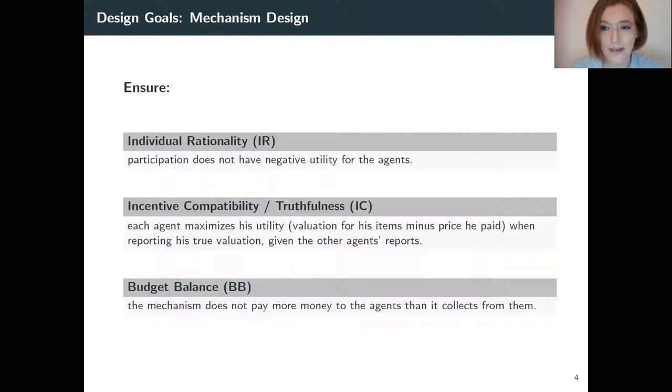We want to do mechanism design, and we would like to design good mechanisms in the following sense. First, we would like them to be individually rational, which means that participation is not something that the agents have to pay for. Second, we would like to be incentive compatible or truthful, which simply means that for everyone, it is a best strategy to simply report their true valuations instead of making up some lie. And lastly, we would like to be budget balanced, which simply means we don't have to subsidize the trade, i.e. the mechanism collects more money than it does hand out.